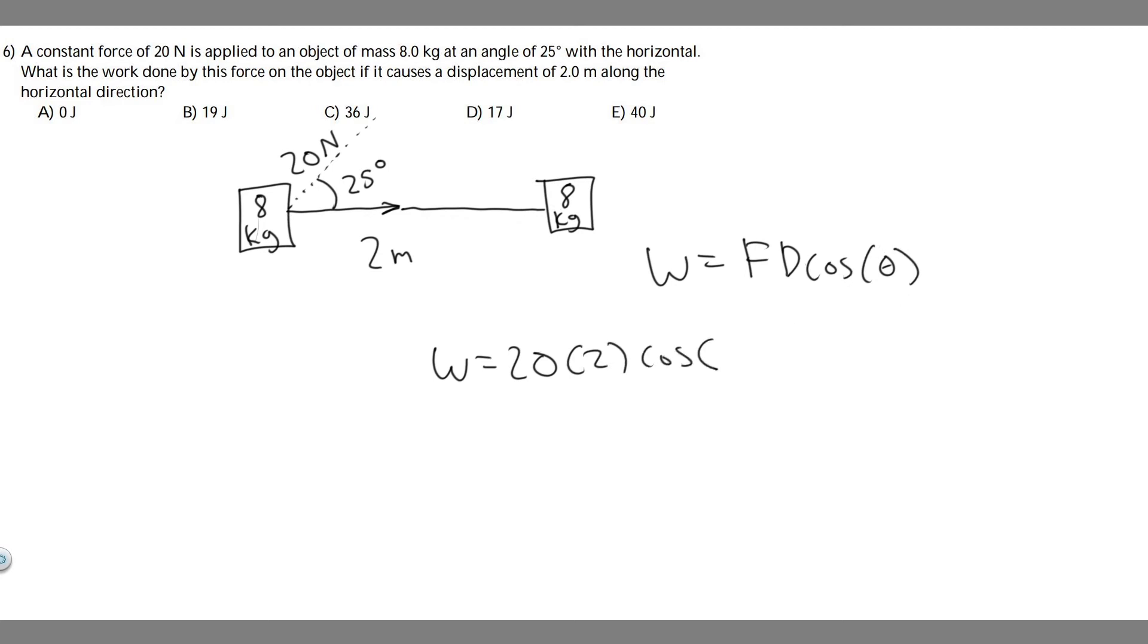So theta is essentially the angle between the force and the direction it's traveling. Notice our force is up this way, and then the direction is this way. The angle between the two is going to be 25 degrees. So in this case, theta is just 25 degrees.